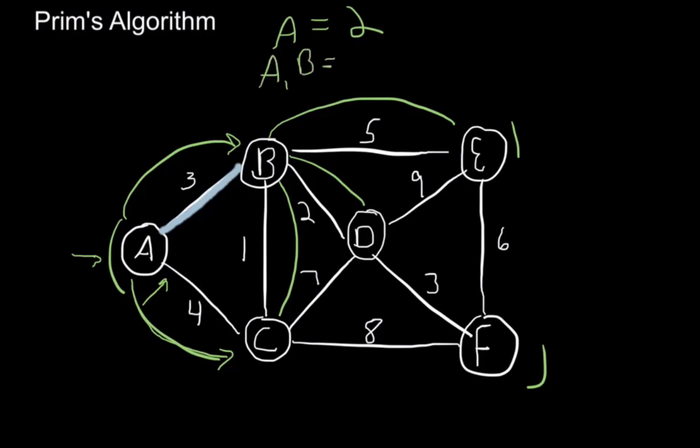We started off with just A in our set, so we only had two options. But now that we have A and B in our set, we have A to C, plus three other options, so now we have a total of four different items that we're going to be comparing.